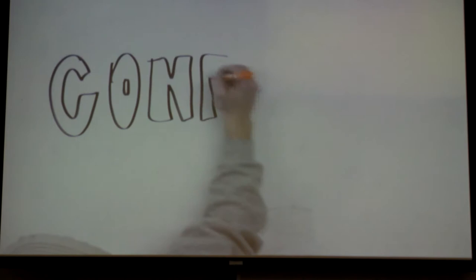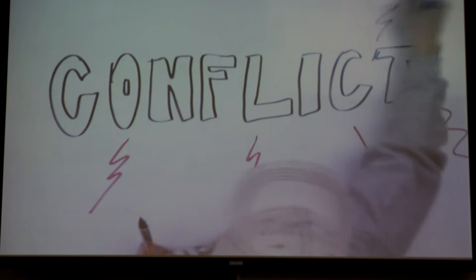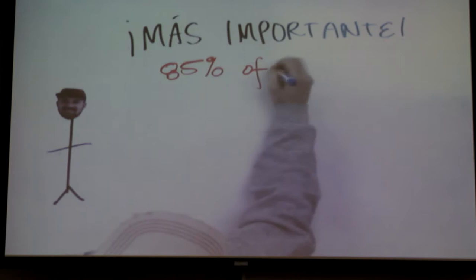Conflict is defined as a process in which one party perceives that its interests are being opposed or negatively affected by the other party. To put into simpler terms, one person believes that another person's efforts are obstructing or getting in the way of their own. Why is conflict important to address? Why does it even matter? It goes away on its own, right? Not so fast.